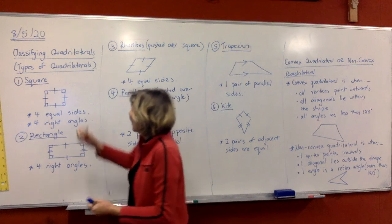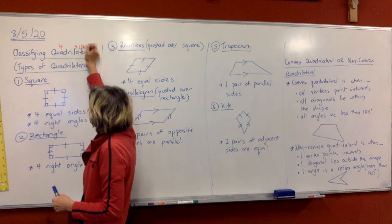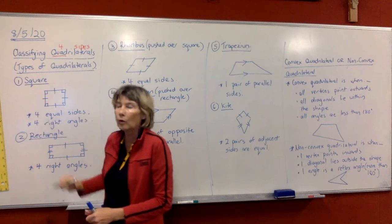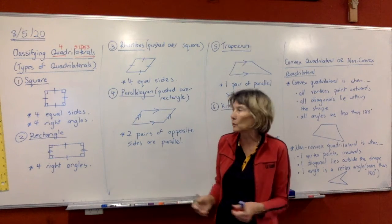So a quadrilateral, don't forget, has four sides. Quad means four, lateral means sides. So all the shapes we're doing today all have four sides.